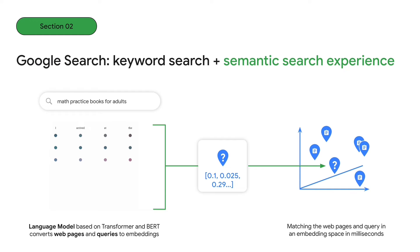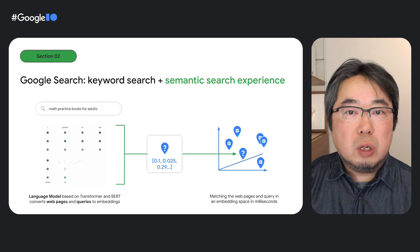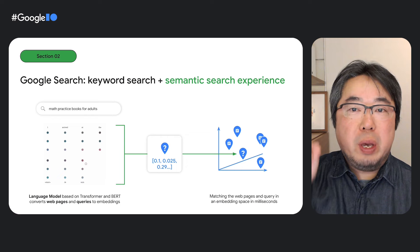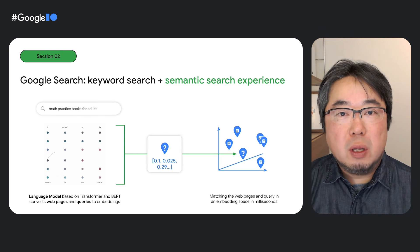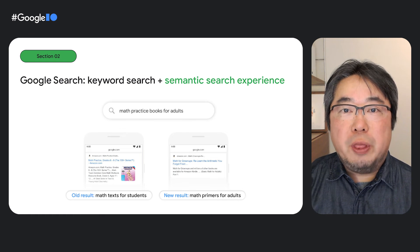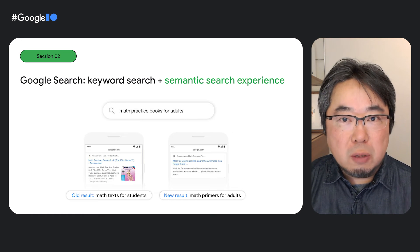When a search query is entered, a language model based on BERT converts it into an embedding. Web pages are also transformed into embeddings beforehand, enabling the service to conduct a vector search to locate the web pages that match the query's intention in the embedding space. In the past, Google Search used only a keyword search model. This model sometimes gave you too many math textbooks for students when someone searched for math practice books for adults. But now with semantic search, it can understand the intention behind the query and show the most helpful result at the top. This is the major shift in the IT industry, especially for AI information retrieval and recommendations.